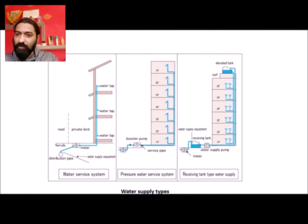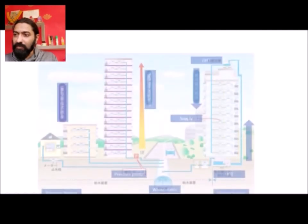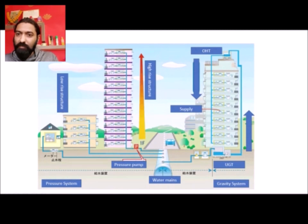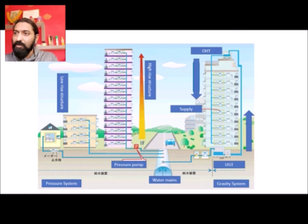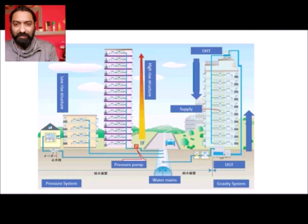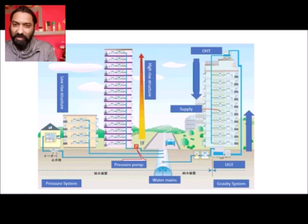In the illustrated diagram, water from the mains goes to the UGT. In the gravity system, it is carried from the UGT to the OHT and then supplied to various floors by gravity. In the pressurized system, water is fetched from the main lines and a pressure pump directly supplies various floor levels, whether it is a low-rise or high-rise structure. That's it for today's lecture on water supply for high-rise buildings. Please feel free to ask any questions. Take care, bye bye.